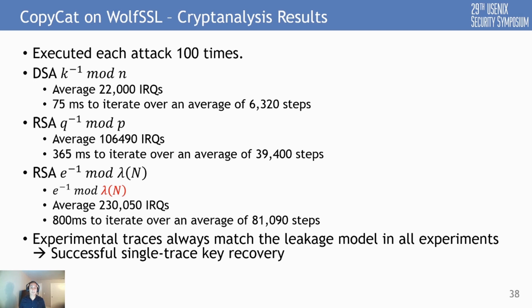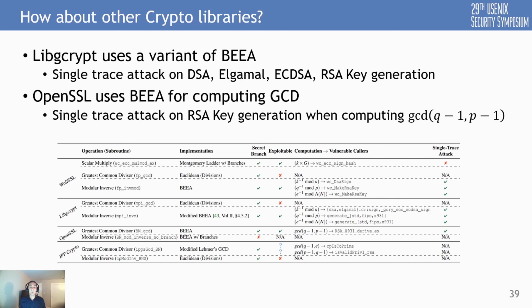We also looked at other crypto libraries to see if they are similarly vulnerable. Libgcrypt was also using a variant of the binary extended Euclidean algorithm, and almost all public-key algorithms in this library were affected. We also found that OpenSSL has a vulnerability using a similar algorithm to compute the GCD, allowing recovery of the RSA private key during key generation in one of their code paths. We reported these vulnerabilities to all of these vendors, and the developers responded and mitigated these issues.